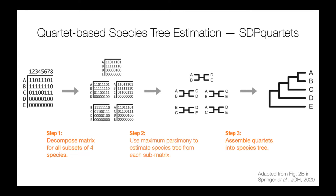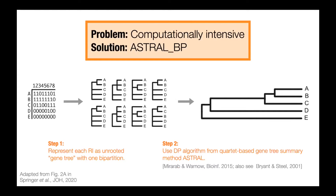In our first species tree estimation pipeline, we decompose our matrix into subsets of four species, run maximum parsimony on each sub-matrix, and then assemble all these quartets into the species tree. Because explicitly evaluating all subsets of four species is computationally intensive, we instead represent each column in the retro element insertion matrix as a gene tree with one bipartition. This allows us to take advantage of the dynamic programming algorithm used inside the quartet-based gene tree summary method ASTRAL.